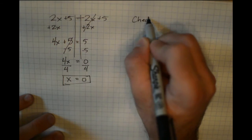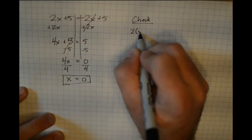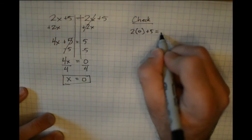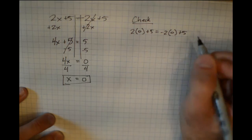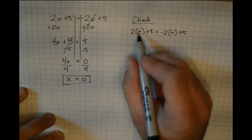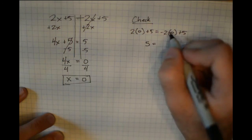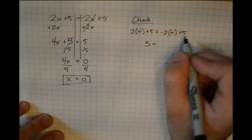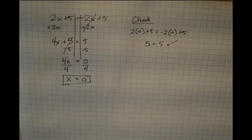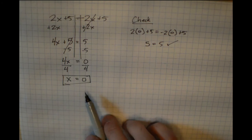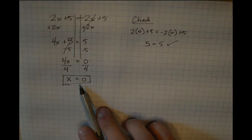Let's check. On the left side: 2 times 0 plus 5 gives 0 plus 5, which is 5. On the right side: negative 2 times 0 plus 5 gives 0 plus 5, which is also 5. We have the true statement 5 equals 5, so x equals 0 is a perfectly valid solution.